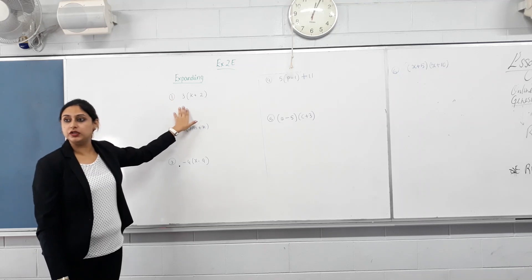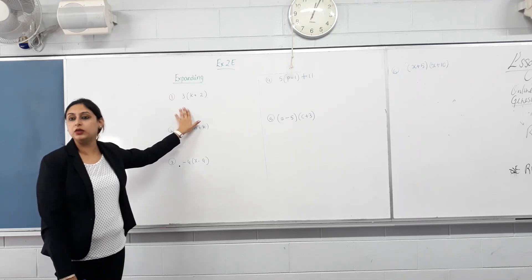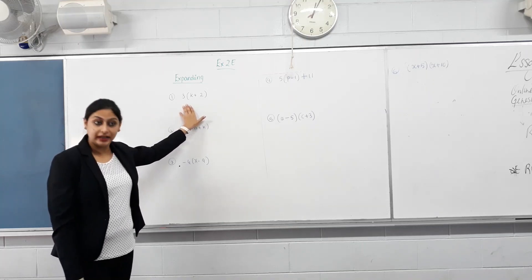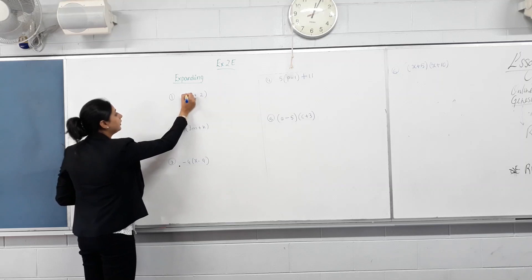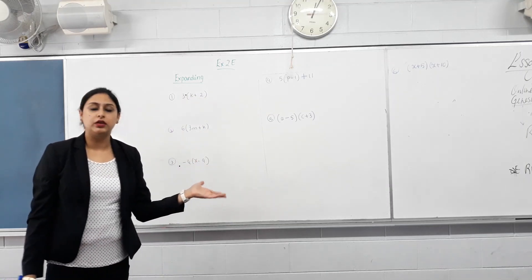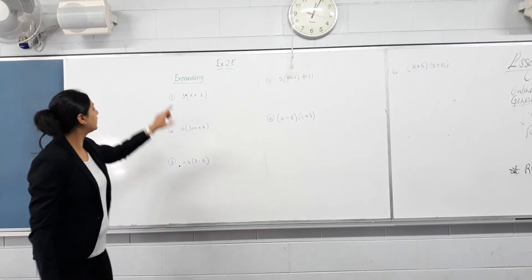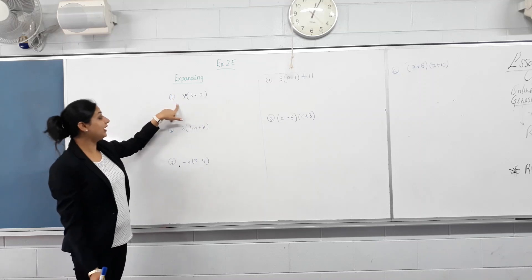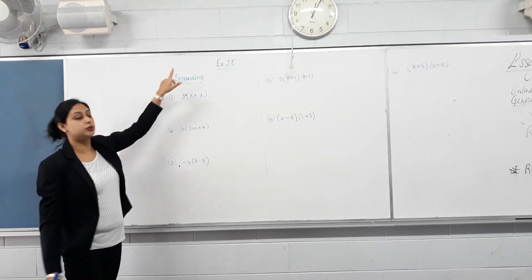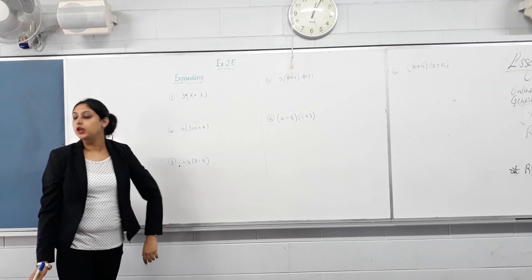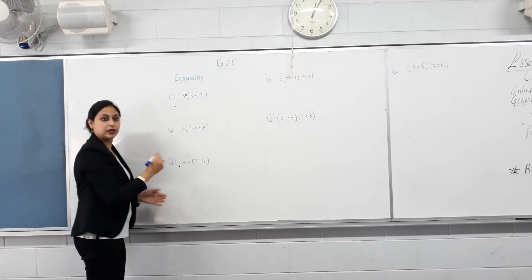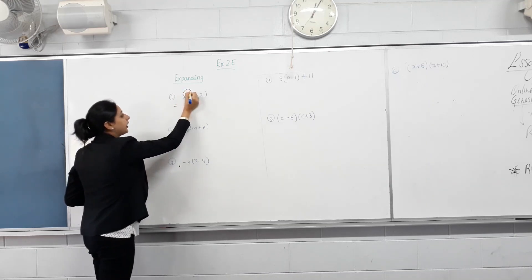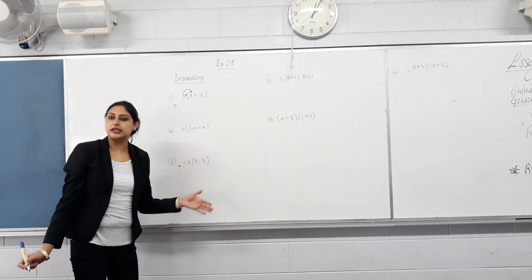If there are no operations written between three and the bracket, what is the sign there? Is it a plus? Is three being added or subtracted? It is times. So is three being times with K only? No. Bracket means that this operation is carried out to the whole thing. So the three needs to be multiplied with K, and three needs to be multiplied with positive two. So this is how I write it — the next step is going to be equal to the first one. Everything outside the bracket gets multiplied with everything inside the bracket.